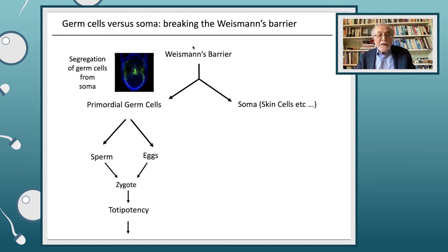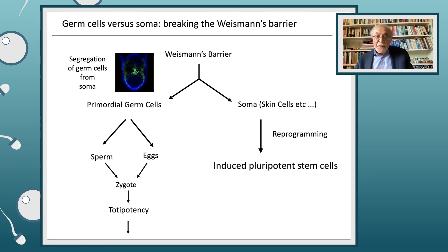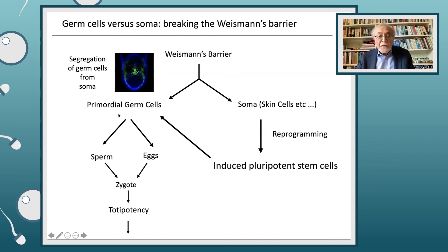At the very start of development, there is a segregation of early germ cells from somatic cells — this is referred to sometimes as Weismann's barrier. We know that skin cells or any other somatic cells cannot convert into primordial germ cells; there is a barrier once the germ cells are set aside. But we now know that we can reprogram these skin cells, make induced pluripotent stem cells, and use these to make primordial germ cells. This step works quite well, both in mice and humans, and in principle we can make sperm and eggs and make totipotent zygotes and potentially whole organisms.